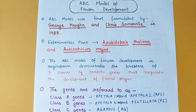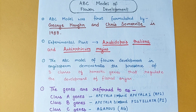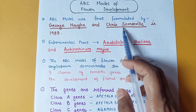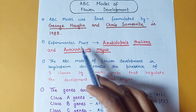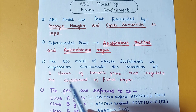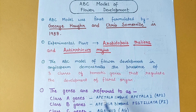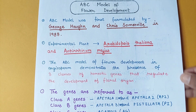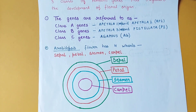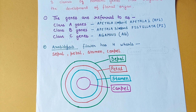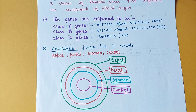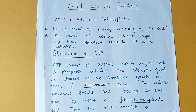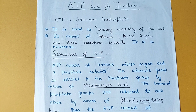Here is the next sheet on the ABC model of flower development. If you have to write about it, first mention the scientist's name by highlighting or underlining it, then mention the experimental plant, followed by the classes of genes and categories of genes present. Finally, draw a diagram at the end to make your answer complete. In this way, you can make your answers more effective by highlighting content and using diagrams or flow charts at proper places.